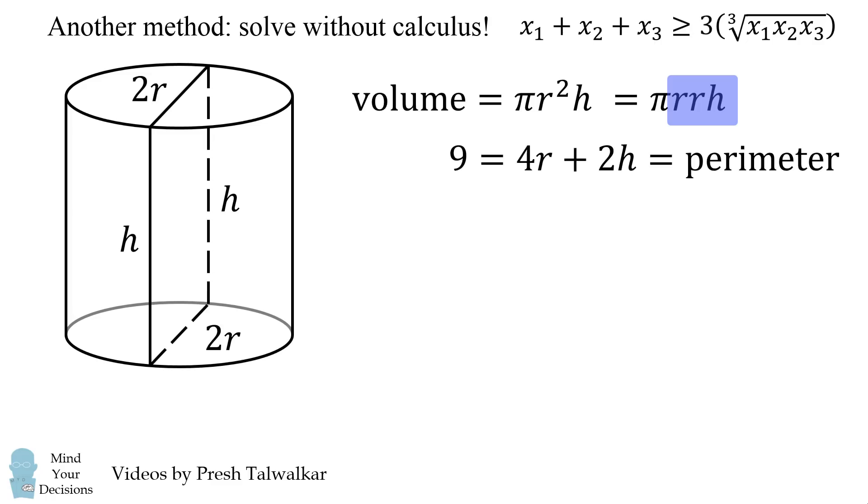So, the other condition is we have the perimeter is equal to 9, which equals 4r plus 2h. We divide by 2 to get 4.5 is equal to 2r plus h. Now, once again, we're going to do a little trick. 2r can be rewritten as r plus r plus h.